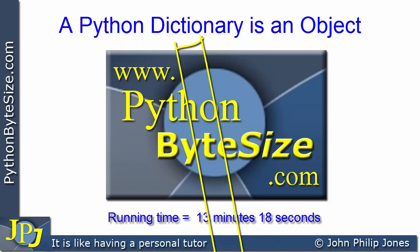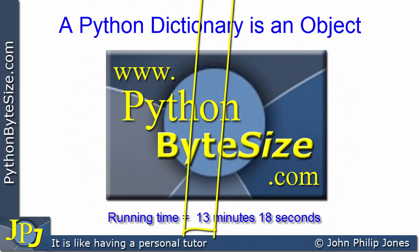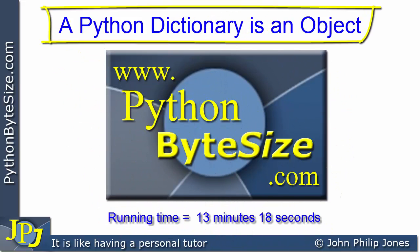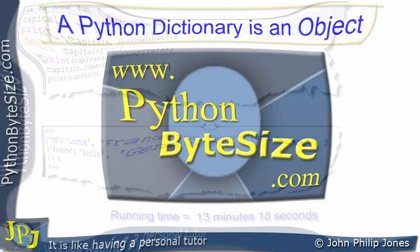A Python dictionary is an object derived from the dictionary class. In this video, we're going to have a look at a Python dictionary object.